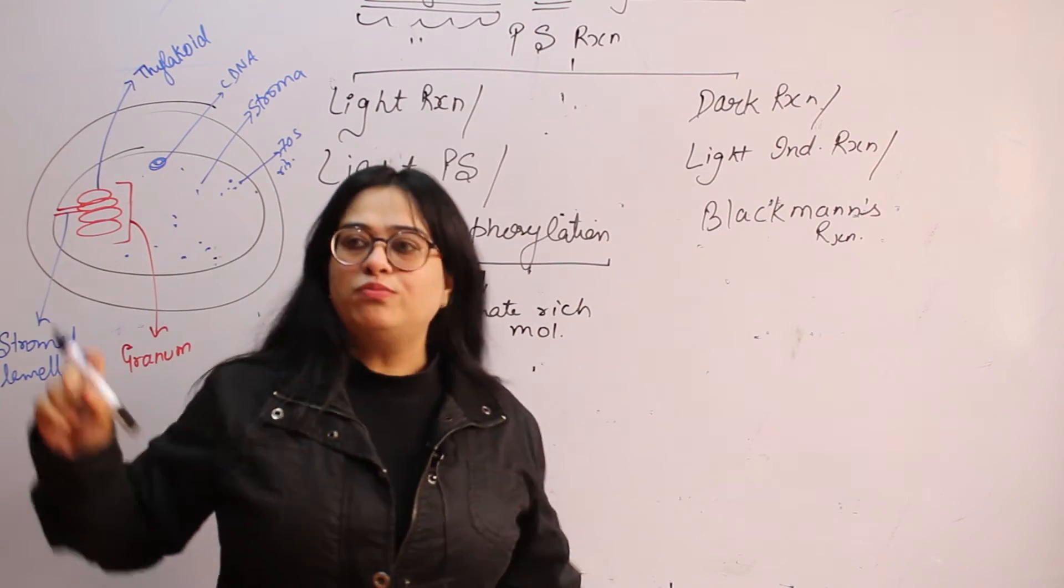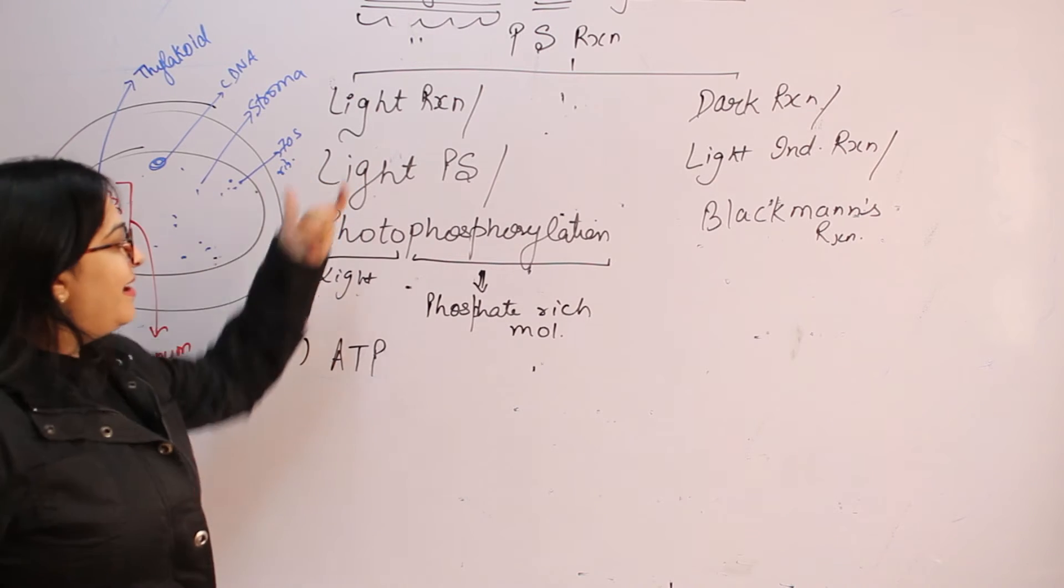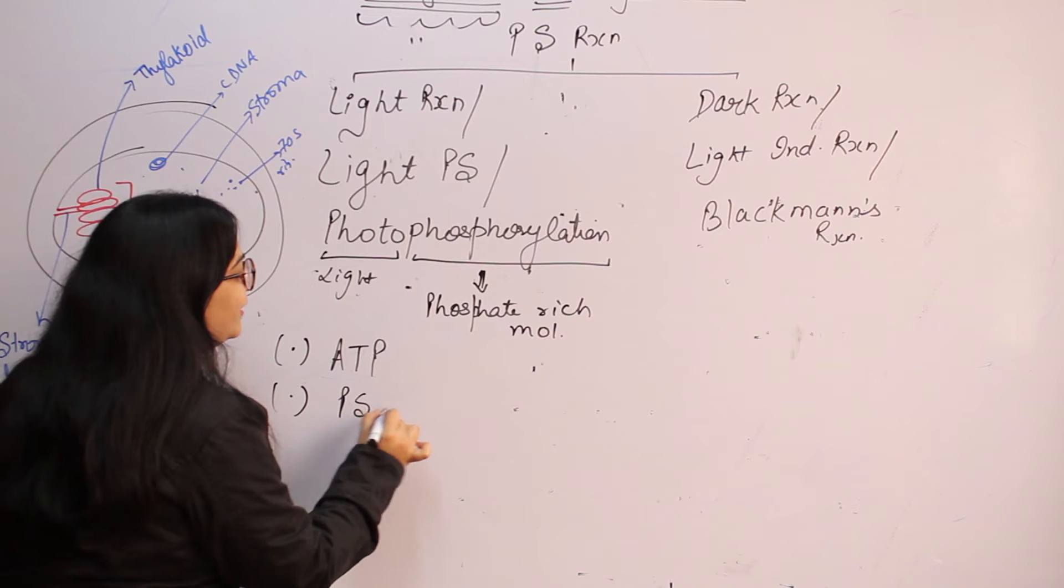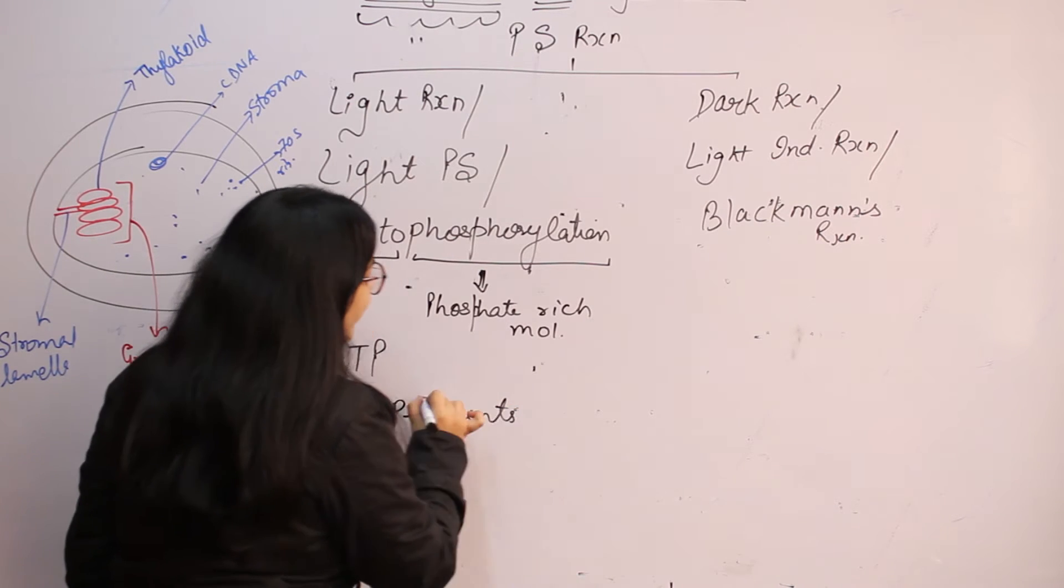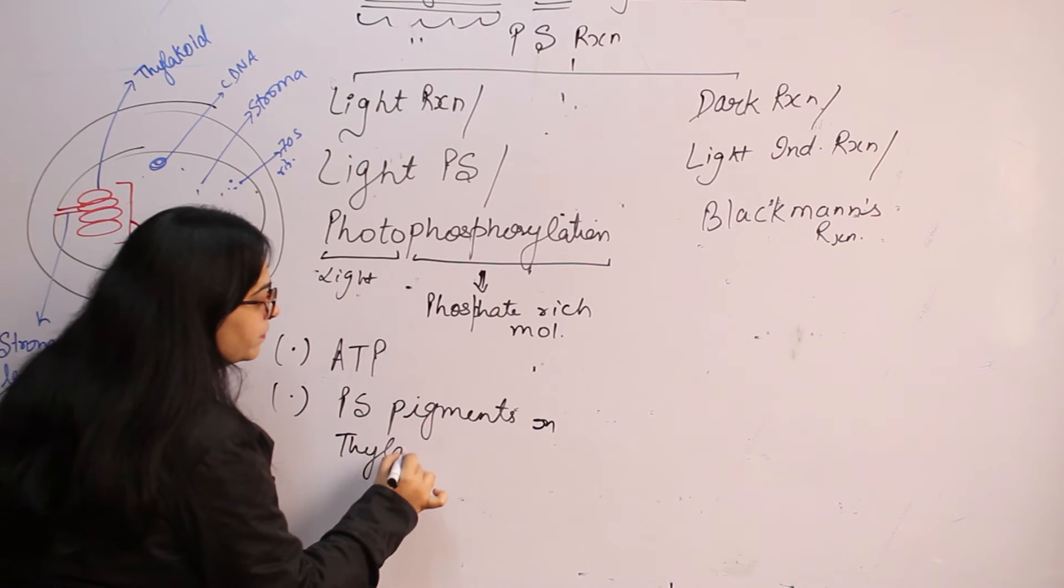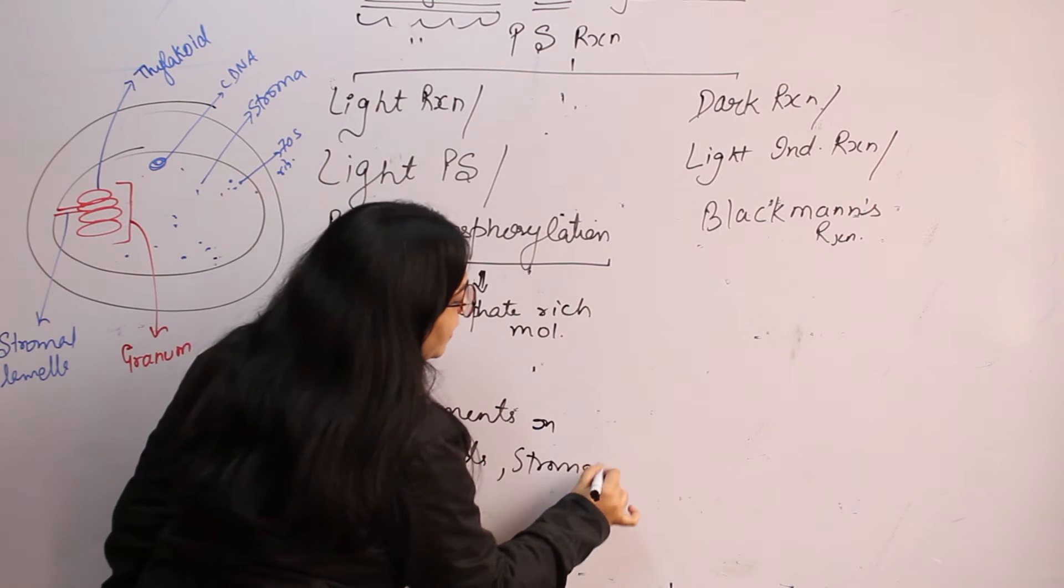So light as well as dark reaction, both are going to happen in chloroplast only. But in light reaction with the help of photosynthetic pigments which are present on thylakoids as well as stromal lamella.